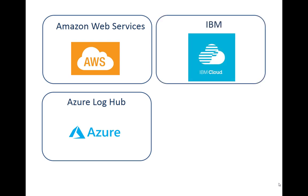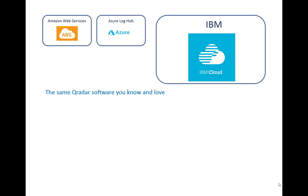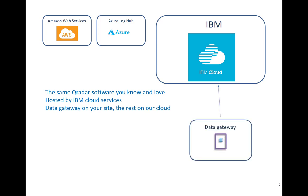Getting past AWS and Azure, what is IBM doing? IBM owns what we used to call SoftLayer, now called IBM Cloud. This is QRadar built on the cloud — running in our big data centers here in the United States. It's sometimes called QRadar SaaS. It's the same software you know and love; there are a couple of control panel icons that are different, but otherwise you wouldn't notice the difference. It's hosted by IBM Cloud Services, and we take a data gateway and put that on your site.